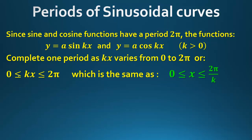We can write this as kx between 0 and 2π. That k affects the interval, so we divide both sides by k to get x by itself, leaving x between 0 and 2π/k.